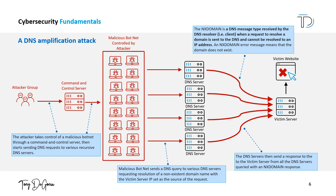One of the most common types of DNS amplification attacks is the NX domain attack, which relies on the fact that DNS servers will respond with a large NX domain packet when a query is made for a non-existent domain. The attacker can use a list of non-existent domain names and the IP address of the target server as the source address to send a large number of queries to DNS servers, which will respond with large NX domain packets directed to the target server.